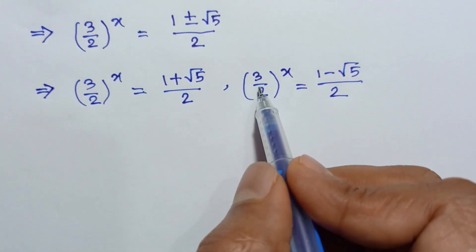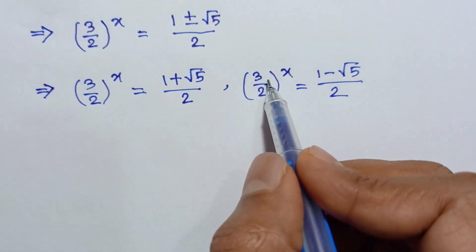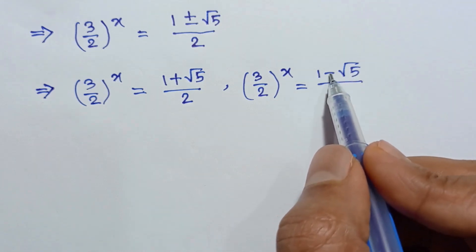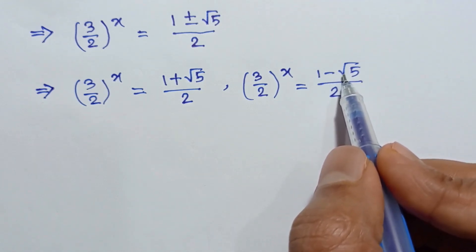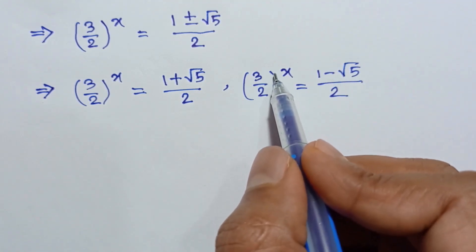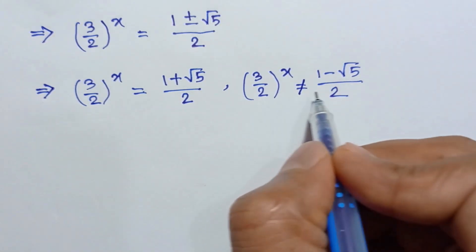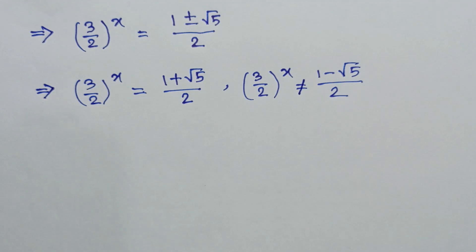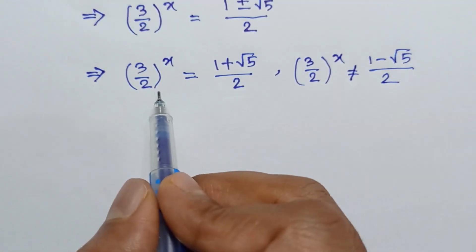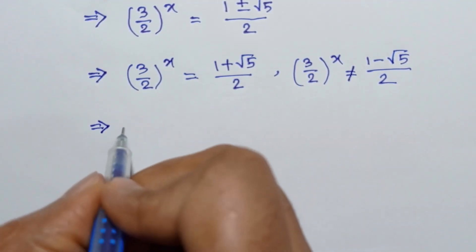Since 3 over 2 is a positive number, any power of it is always positive. But the square root of 5 is greater than 1, so 1 minus the square root of 5 is negative — meaning the right side would be negative while the left side is always positive. They can never be equal, so there is no solution from the negative case.